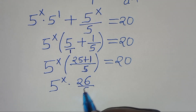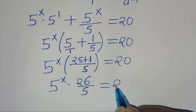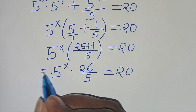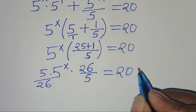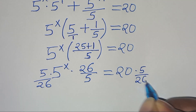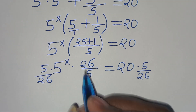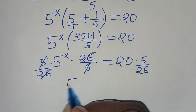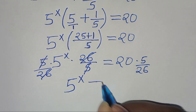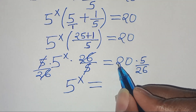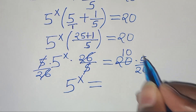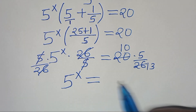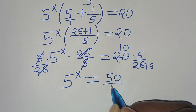We have 5 to the power of x multiplied by 26 over 5 equals 20. The next step is to multiply both sides by 5 over 26. Simplifying 5 and 5, and 26 and 26, we get 5 to the power of x equals 20 times 5 over 26. Simplifying, 20 divided by 2 is 10 and 26 divided by 2 is 13, so 5 to the power of x equals 50 over 13.